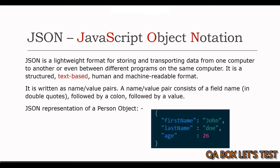Before we learn JSON path in much more detail, let's first understand what JSON is. JSON stands for JavaScript Object Notation. JSON is a lightweight open standard file format for storing and interchange data format for transporting data from one computer to another, or between different programs on the same computer.